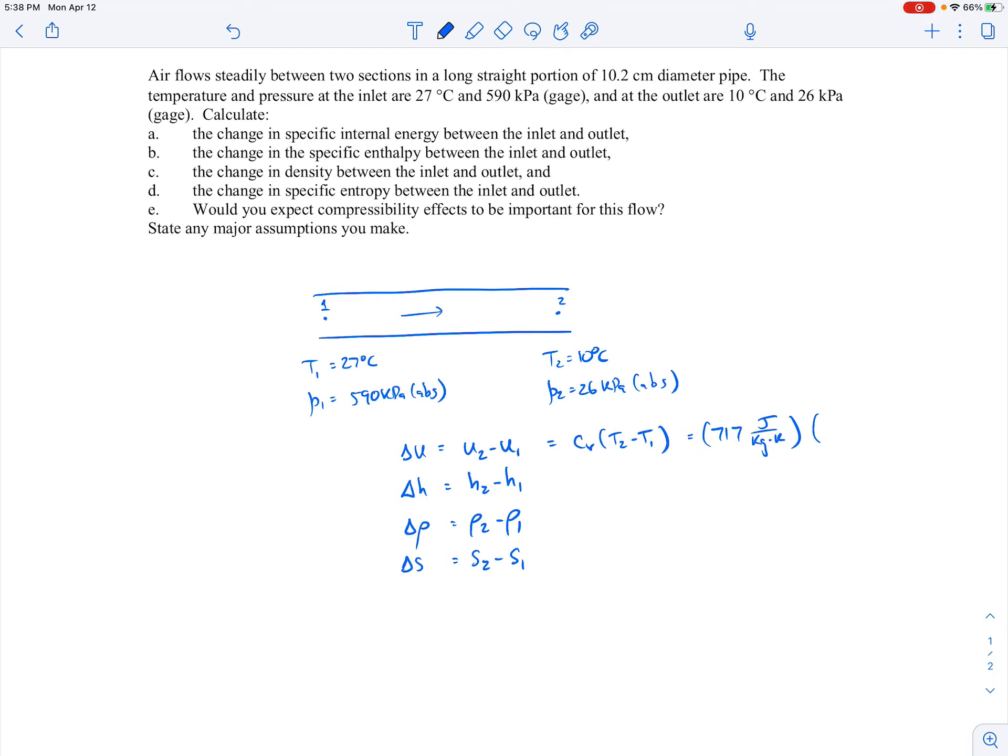And then the delta T will be 27 minus 10. Now typically you would convert those to Kelvin and then subtract it, but since a change of one degree Kelvin and a change of one degree Celsius are exactly the same, I can simply just put in—it should be T2 minus T1. So T2 is 10 degrees C and T1 is 27 degrees C. I could convert these to Kelvin, so this would be 283 Kelvin and this other one would be 300 Kelvin. You still get the same delta value. And then when you do the calculation, this comes out to be minus 12.2 kilojoules per kilogram. So that's our delta U.